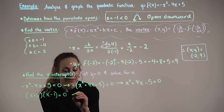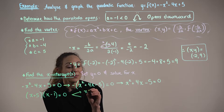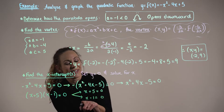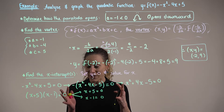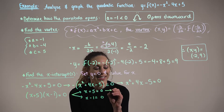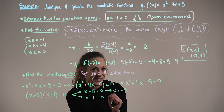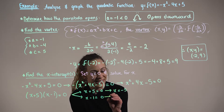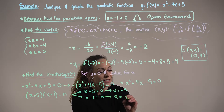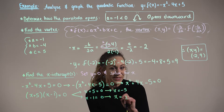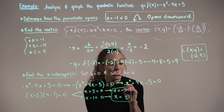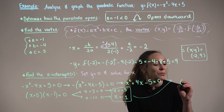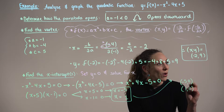Considering each binomial separately: x + 5 = 0 gives x = -5, and x - 1 = 0 gives x = 1. These are our two x-intercepts. Written as ordered pairs for graphing, our x-intercepts are (-5, 0) and (1, 0).